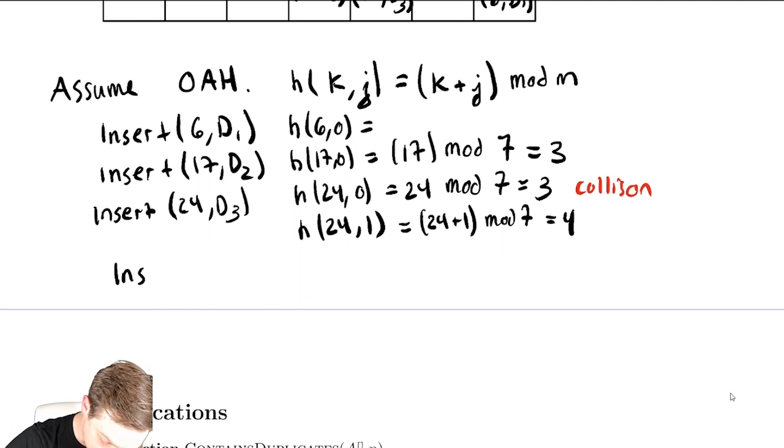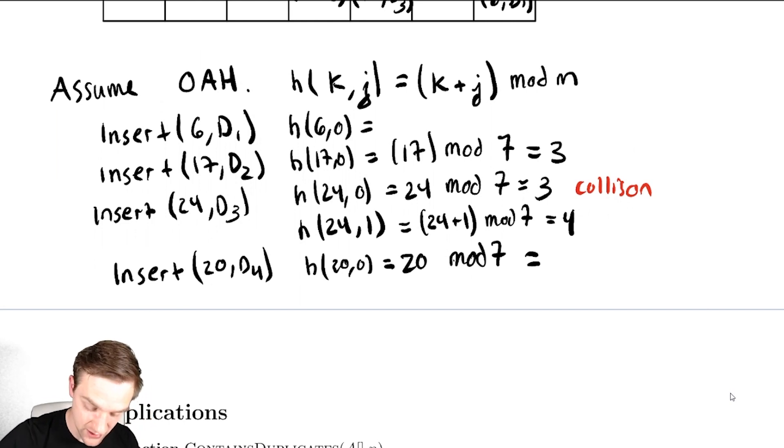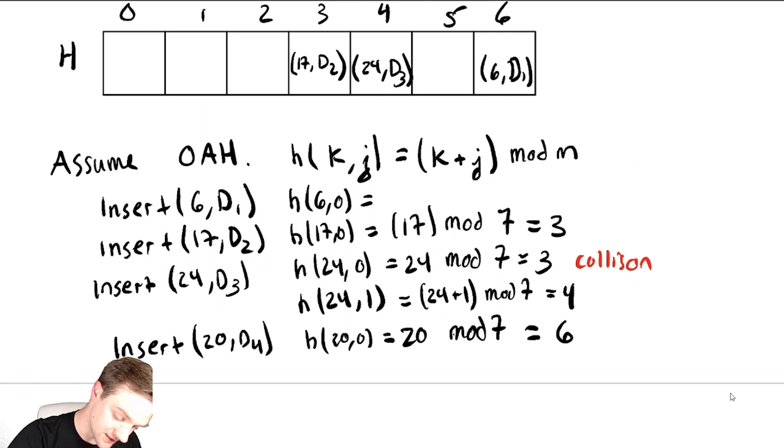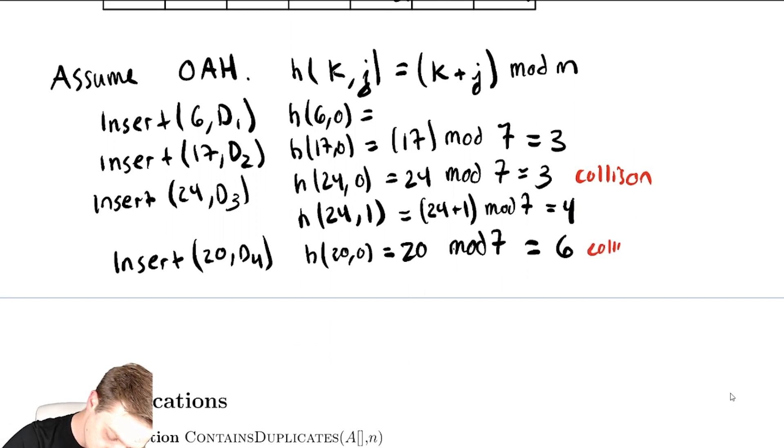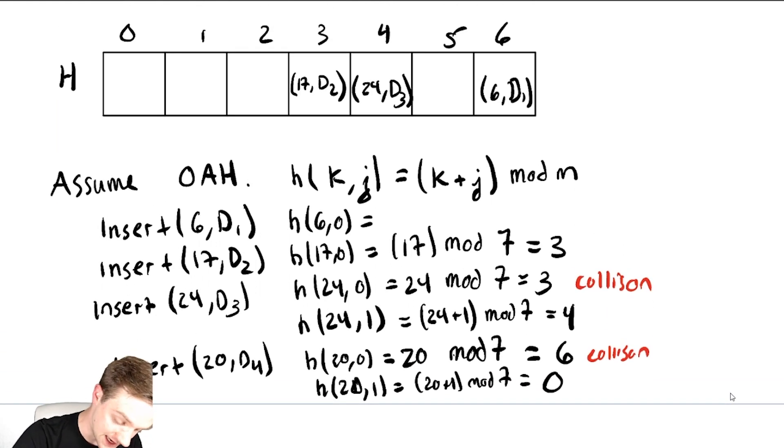Let's do one more insertion. Let's say we did insert 20, d4. We get h of 20, 0, is 20 mod 7, which is going to give us 6, because that is equal to 14 plus 6. So we want to insert it at this location here, but we can't. So we must rehash. So we get another collision. So we must rehash and get h of 20, 1 is equal to 20 plus 1 mod 7, which is equal to 0. So now this gets rehashed over to location 0 as 20, d4.